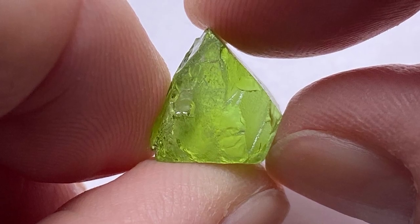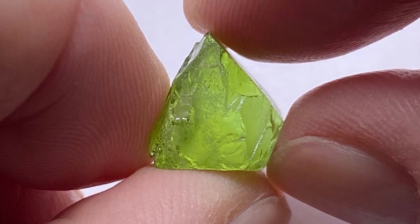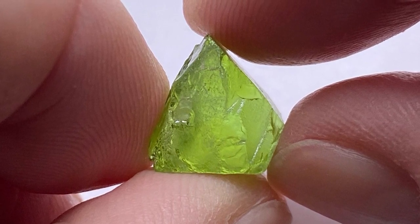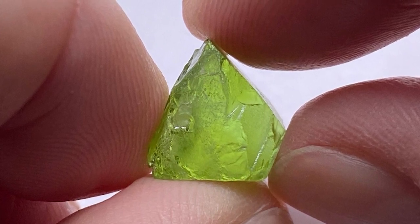This is top color peridot, an electric green, and it comes from Pakistan. This rough is currently 14 carats and measures about 12 by 10 by 9.5 millimeters.